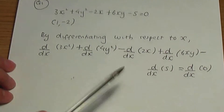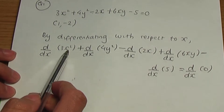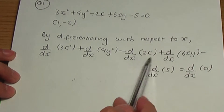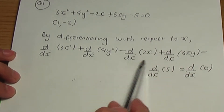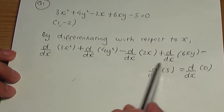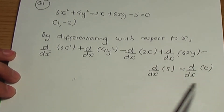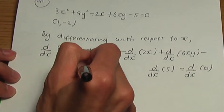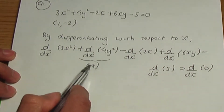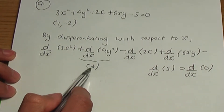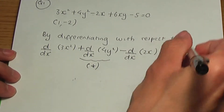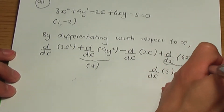d/dx of 3x² is straightforward — you get 6x. Similarly, when you differentiate 2x that's 2, and the derivative of 5 is 0. Now let me do two side calculations: I'll call differentiating 4y² 'star', and differentiating 6xy 'double star'.